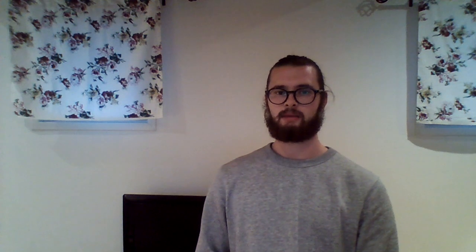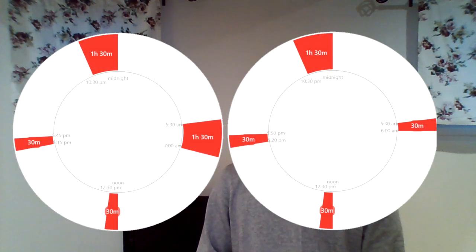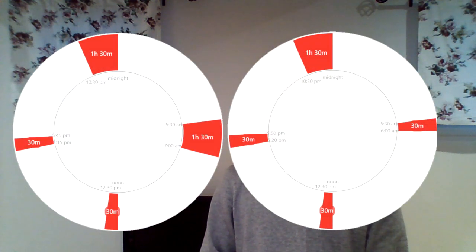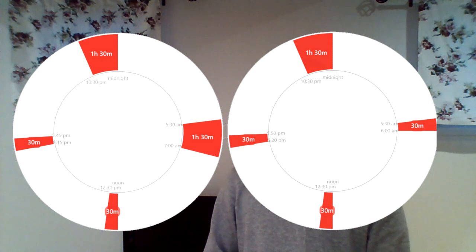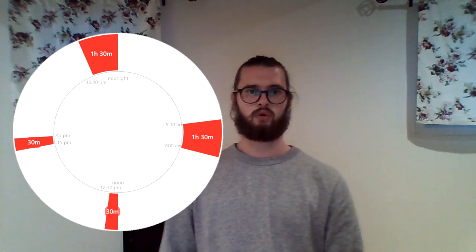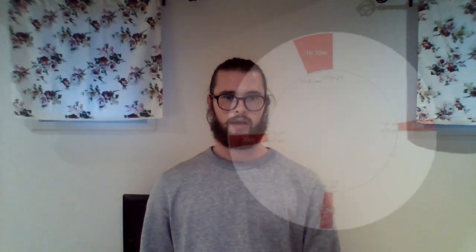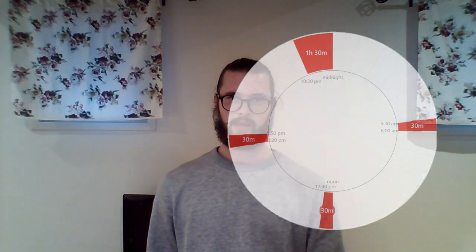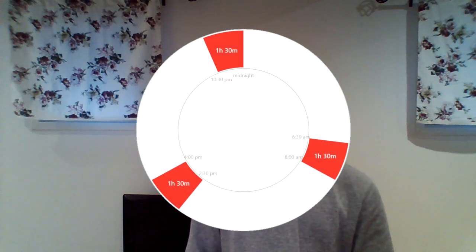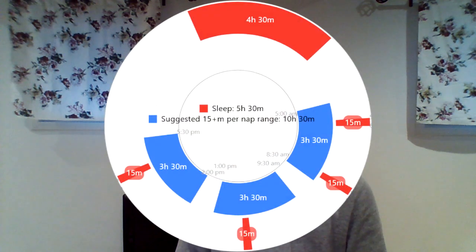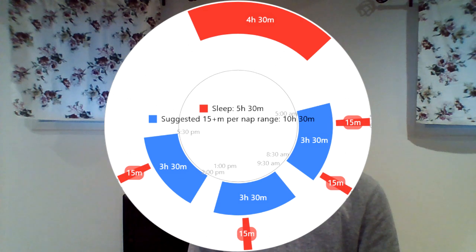There are also a few other schedules with unique names: Bimaxion and Trimaxion, that are based on the Dymaxion schedule and make use of 30-minute naps. Bimaxion consists of two cores and two 30-minute naps, and Trimaxion consists of one core and three 30-minute naps. A schedule with three cores and no naps is called Triphasic. And finally, we have the experimental schedule Seva Mile, which consists of one core and a varying number of naps.